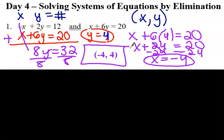Now I'm going to write it as an ordered pair, and that's where those two equations are the solution. Think about someone who is in the same algebra class as you — you would have the same class period and the same subject. You need both in order to have the answer. So that's elimination, day 4.